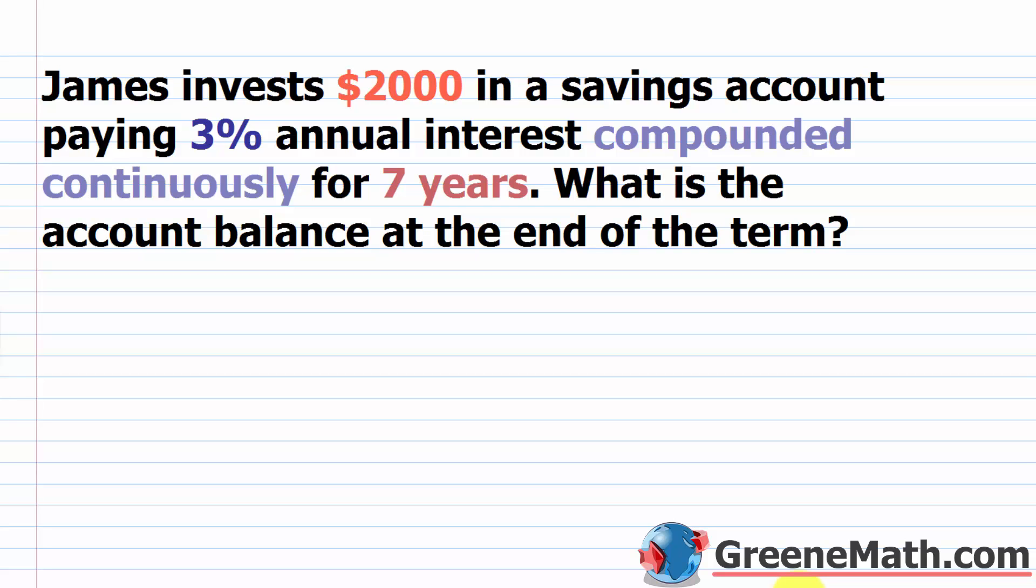So we have that James invests $2,000 in a savings account paying 3% annual interest compounded continuously for seven years. What is the account balance at the end of the term? Very easy. Again, A equals P times E raised to the power of R times T. Most of this is just memorizing the formula.